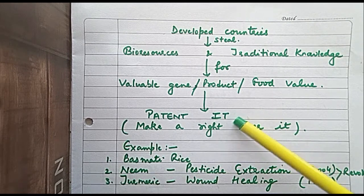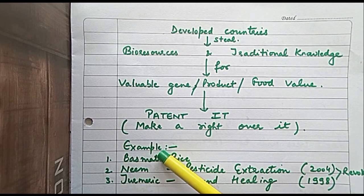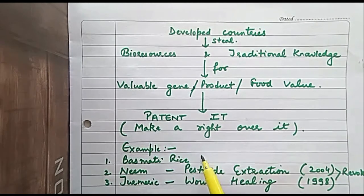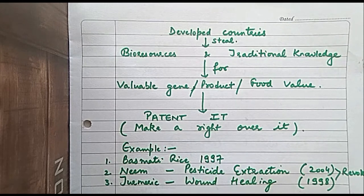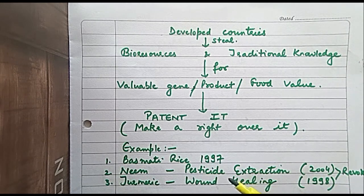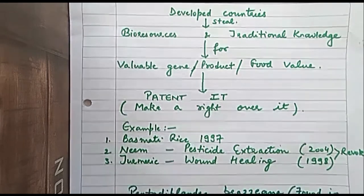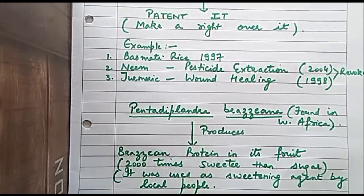This patent can be problematic sometimes. Patents were put on rice in 1997, on neem for pesticide extraction, and on turmeric for wound healing. The turmeric patent was revoked in 1998, and the neem patent was revoked in 2004.